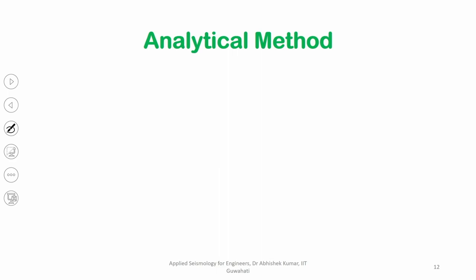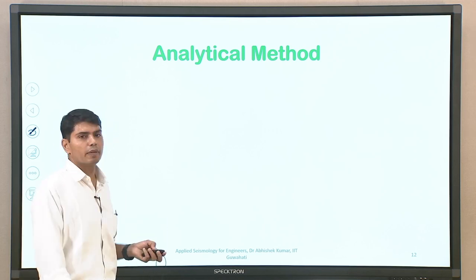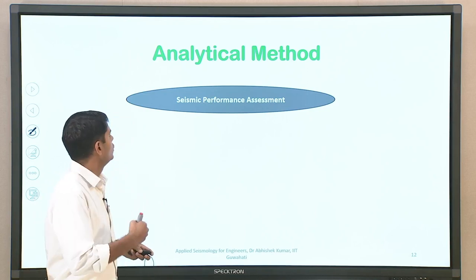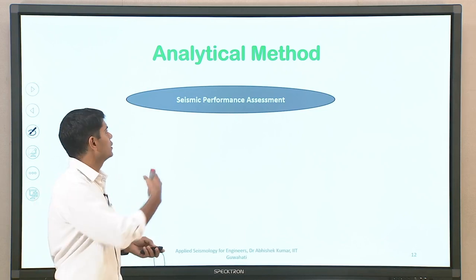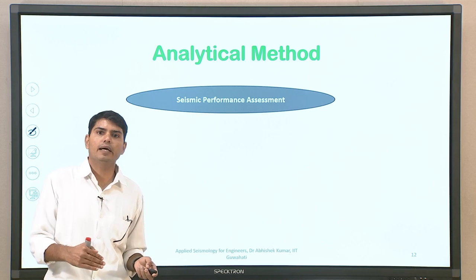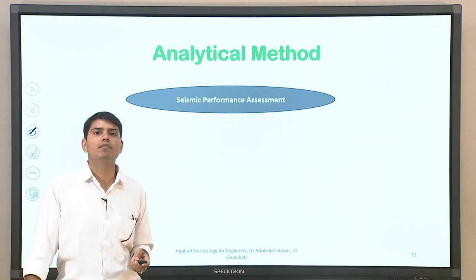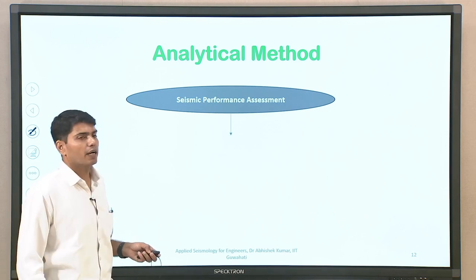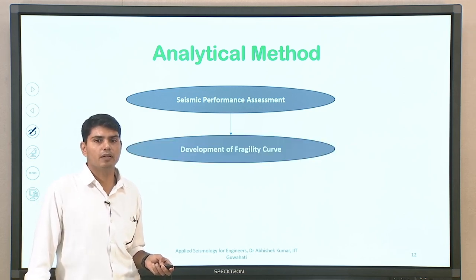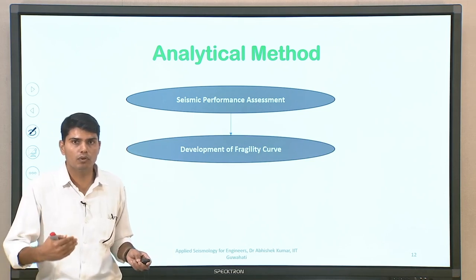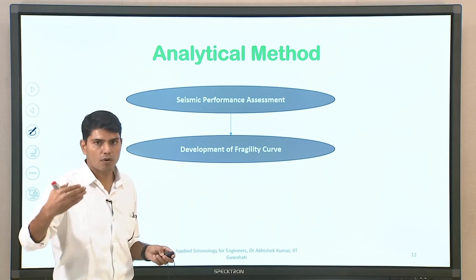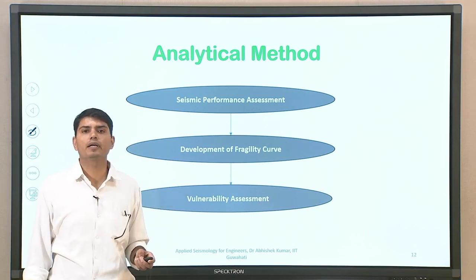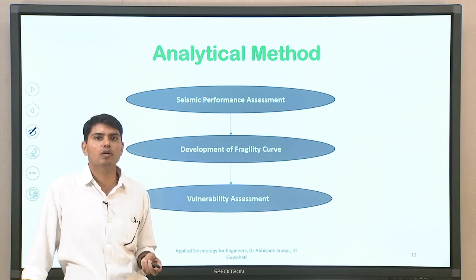This covered the empirical method. The analytical method involves numerical modeling of a particular structure to find the demand capacity based on laboratory investigation or pushover analysis, then subjecting the building to different sets of input motion characteristics to understand damage characteristics corresponding to different ground motions. You first perform seismic performance assessment and then develop fragility curves, which give the cumulative probability of damage at different damage levels, enabling vulnerability assessment based on the analytical method.